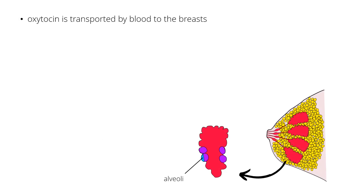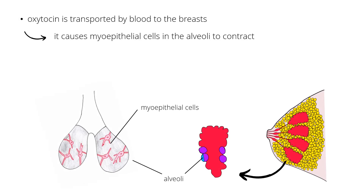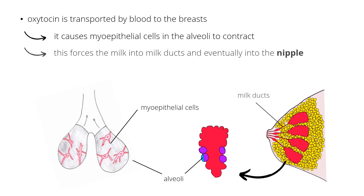Here it causes contraction of myoepithelial cells around the alveoli. This contraction forces the milk into milk ducts and eventually into the nipple. This process is called milk ejection, or milk let down.